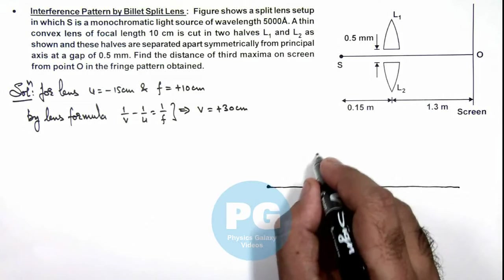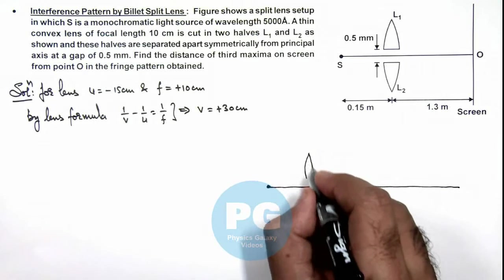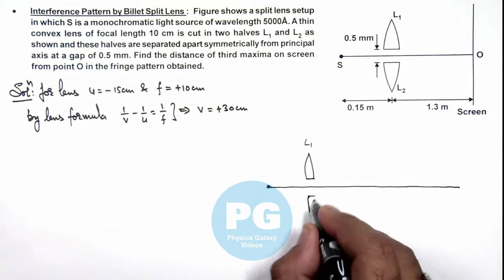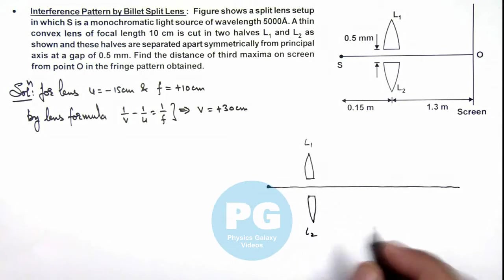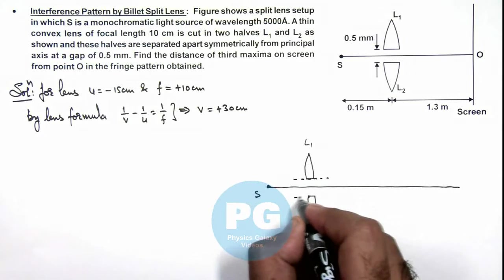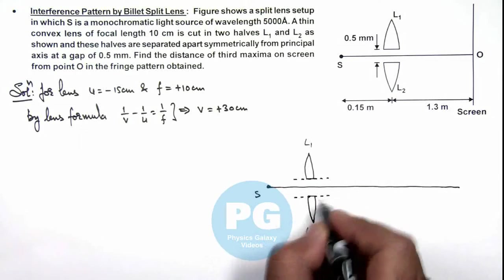This is the situation when we are using two lenses, one is L1 and other is L2. For this source we can consider these lenses are having their individual principal axis which I am drawing here as dotted lines.